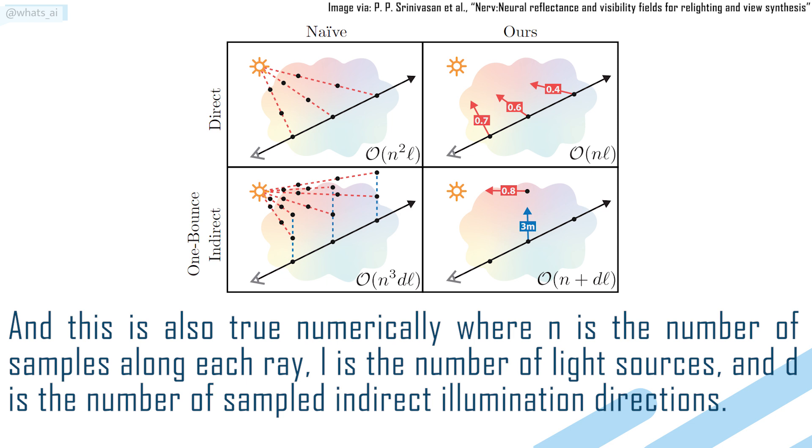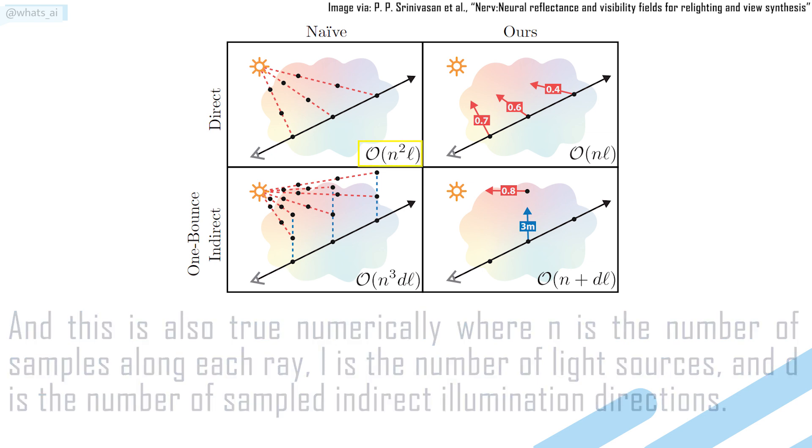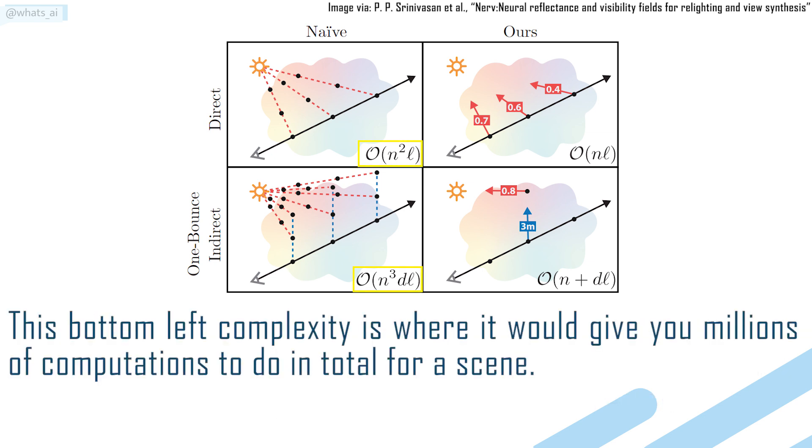And this is also true numerically, where N is the number of samples along each ray, L is the number of light sources, and D is the number of sampled indirect illumination directions. This bottom-left complexity is where it will give you millions of computations to do in total for a scene.